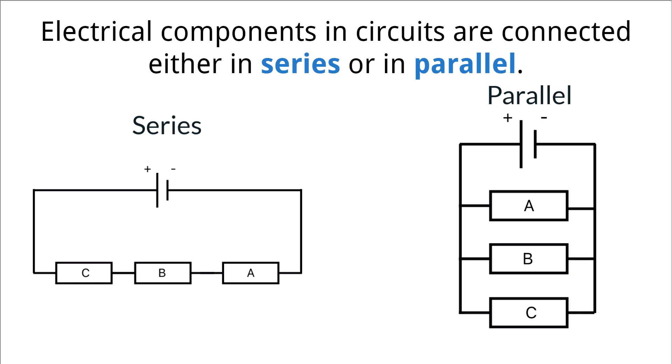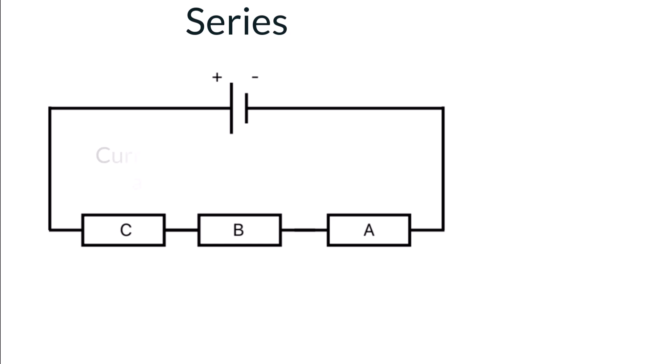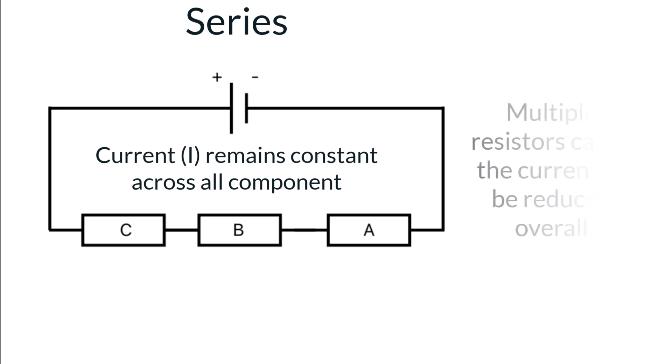The arrangement of components in a circuit also has effects on the measured current, potential difference, and resistance. In a series circuit, the current remains constant across all of the components. However, the amount of total resistance in the circuit will reduce the current. As the electric charge moves through each component, the charges are losing energy to the components, meaning the same amount of energy moves through each component.